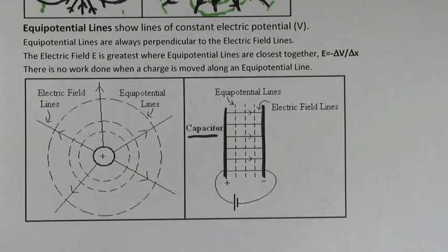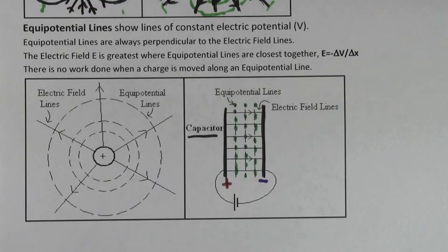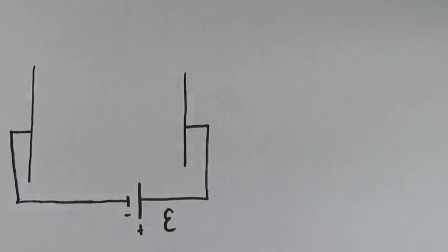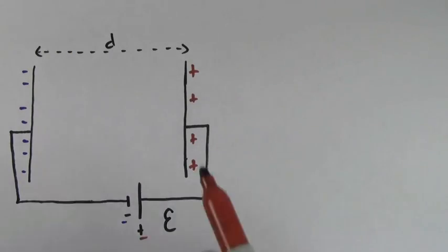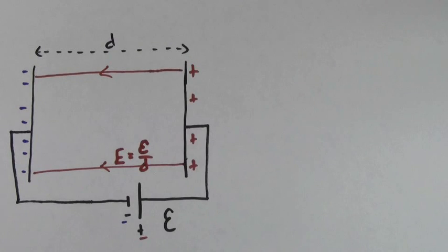For a parallel plate capacitor, the plates are equipotential lines since V is constant on each plate. The electric potential will drop uniformly from the positive plate to the negative plate, so we draw the equipotential lines vertically in this example. The electric field points toward lower electric potential. A very common problem involves a battery of EMF epsilon hooked up to capacitor plates spaced a distance D apart. To find the electric field in the region between the plates, you simply use E equals delta V over delta X, which gives you E equals epsilon over D. The electric field always points from positive to negative.